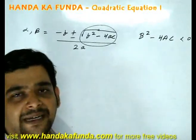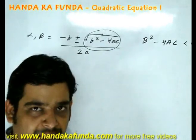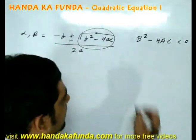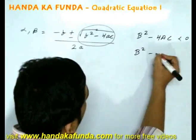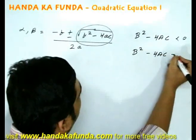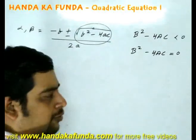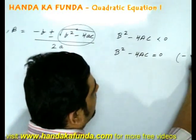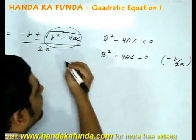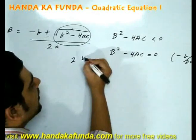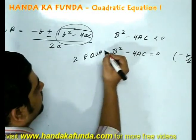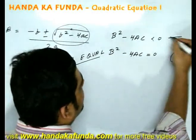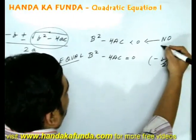Or you can say alpha and beta will be complex numbers in that particular case. If b square minus 4ac is equal to 0, that would mean that both its roots will be minus b by 2a. That is the condition for two equal roots. And this is the condition for no roots.